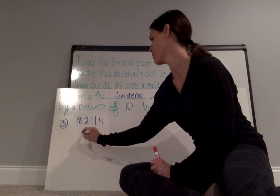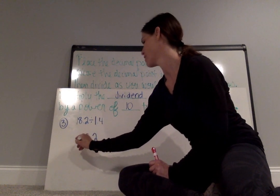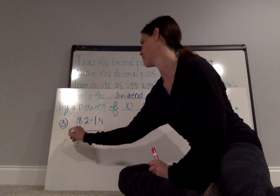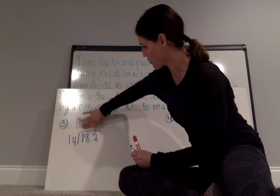Again, the first number that is listed, so in this case, 18.2 is my dividend. My number that is listed second is my divisor, which is 1.4. Let me erase this so I have some more room.